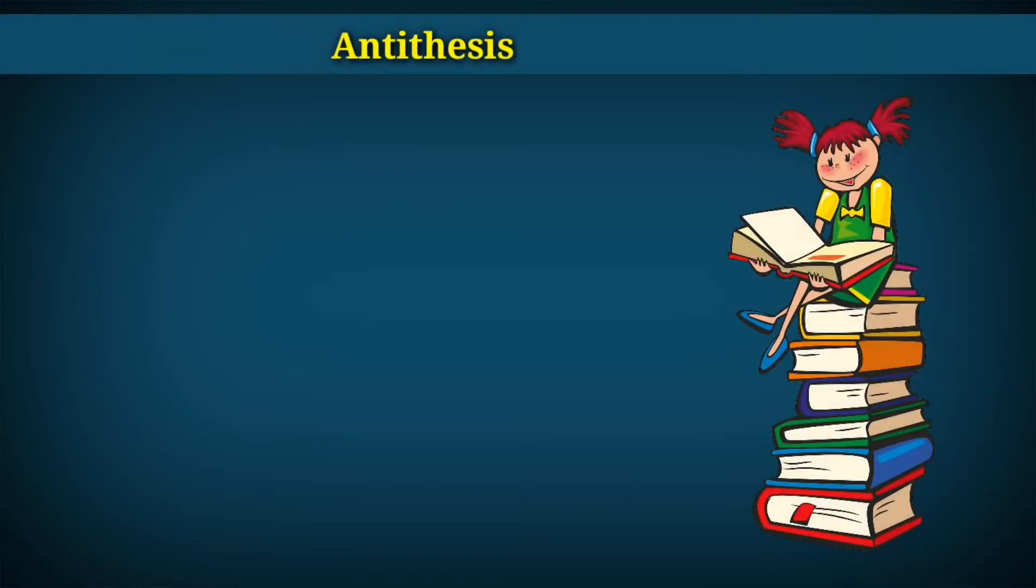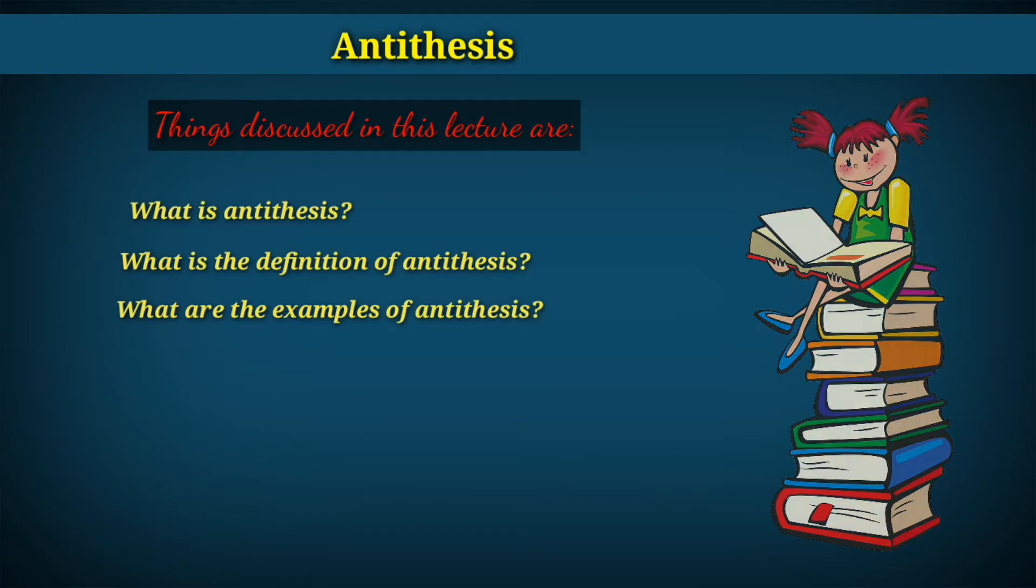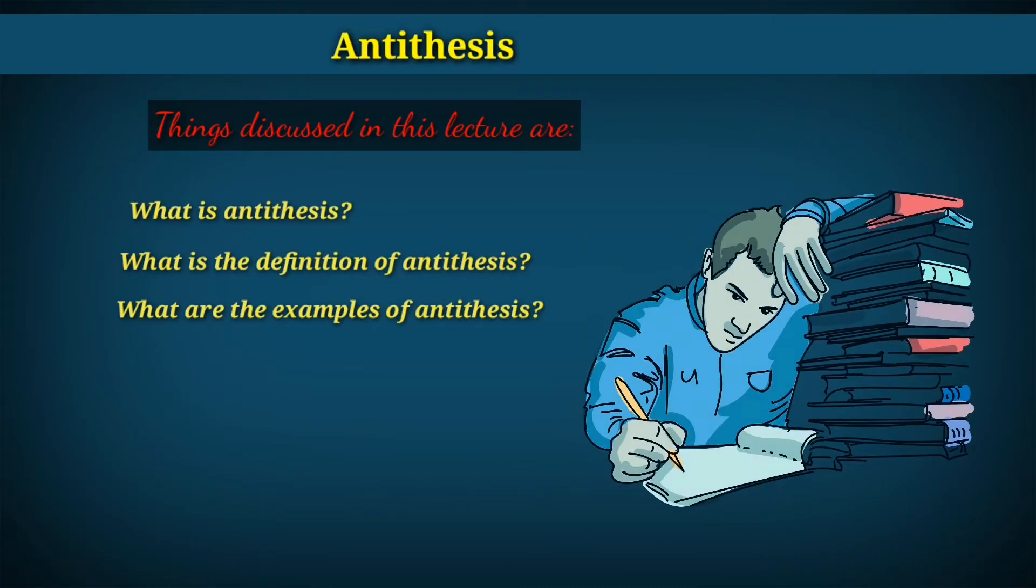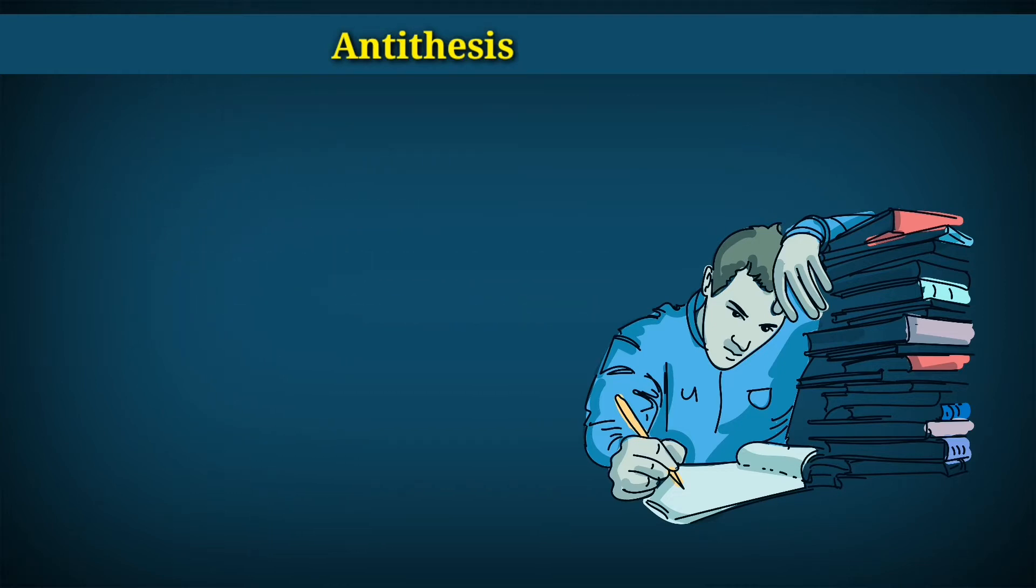Hi everyone, today we are going to learn about antithesis. So what actually is antithesis? Well, it is the combination of two words: anti, which means against, and thesis, which means placing. So simply you can say when we keep one thing against another, this is antithesis. But this is the etymology of the word. What actually is antithesis?